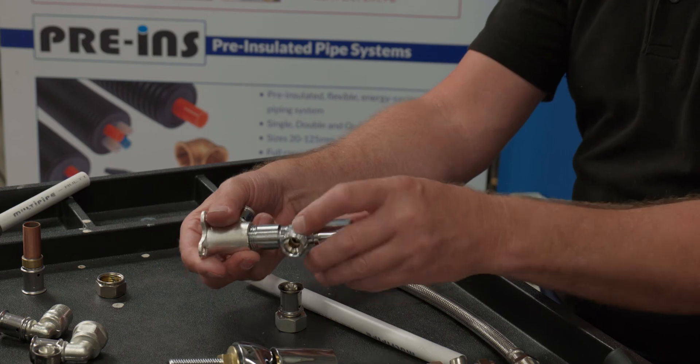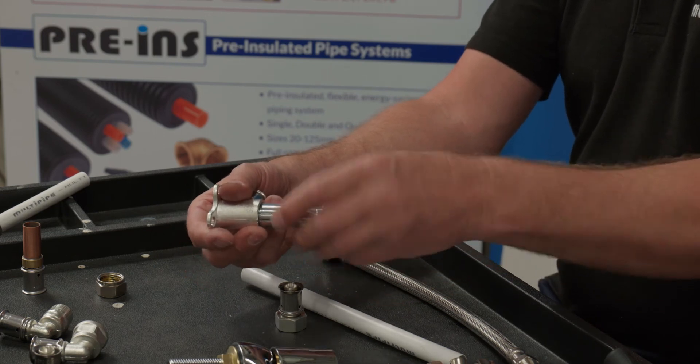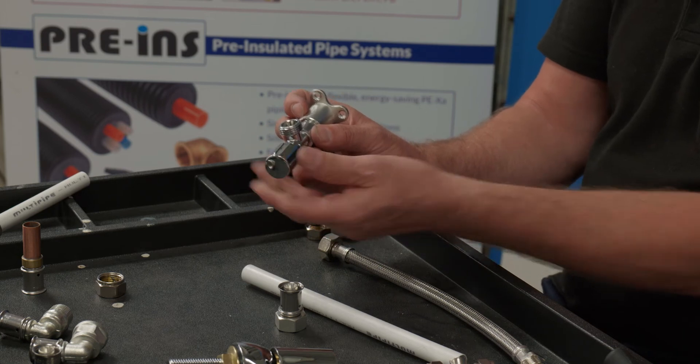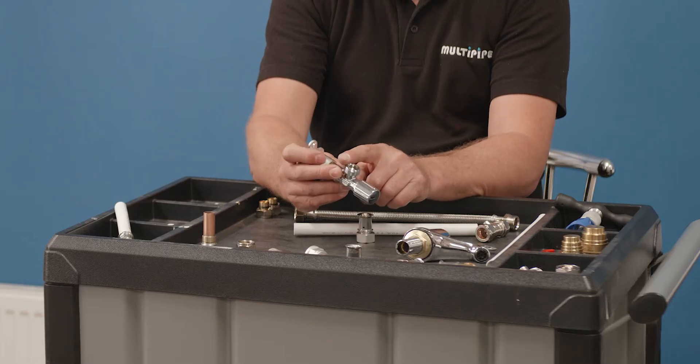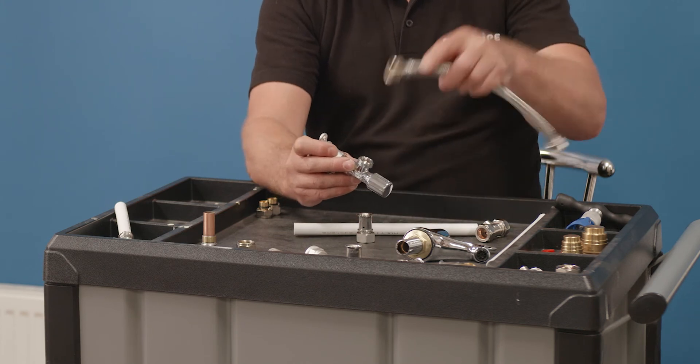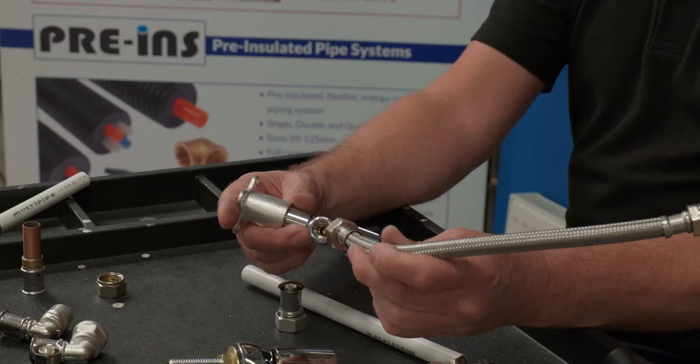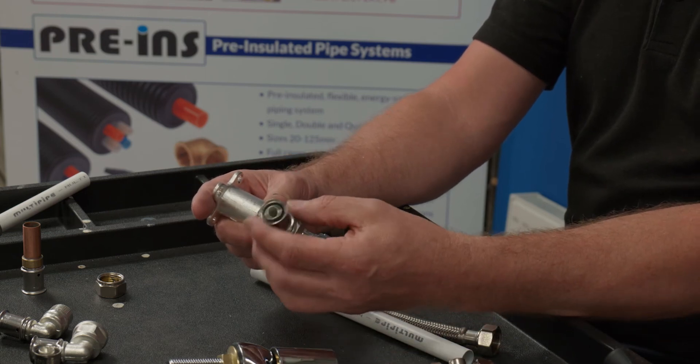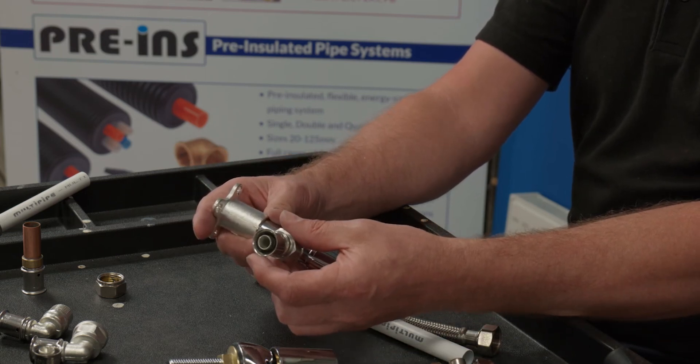That isolation valve will screw in into the wall plate elbow, gives us full bore isolation on the front here. And then the adapter on here is a flat face washer. So you've got a couple of choices. You could use a flexible tap connector to connect onto there or even a swivel connector that would allow you to take MLC directly up to your chosen appliance.